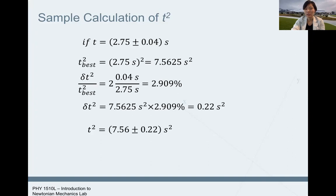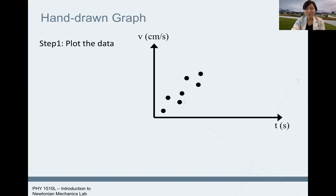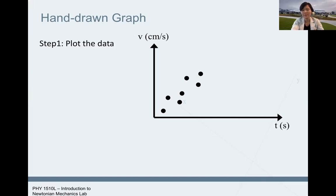Once you have all your data, you're going to plot it on the graph. We want to practice drawing the graph by hand, even though you could do it by computer. We want to be able to understand the reasoning behind the best fit. First, you plot the data — for example, T equals one second, velocity is 25 centimeters per second, you put a dot on your graph paper — you put another dot until you plot all the dots. You can see that represents a linear pattern, so you're going to draw a line through these dots.